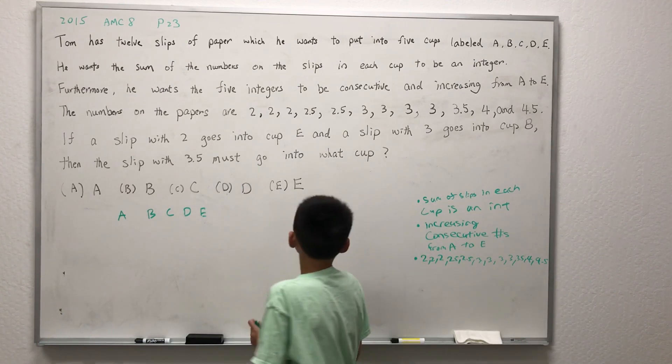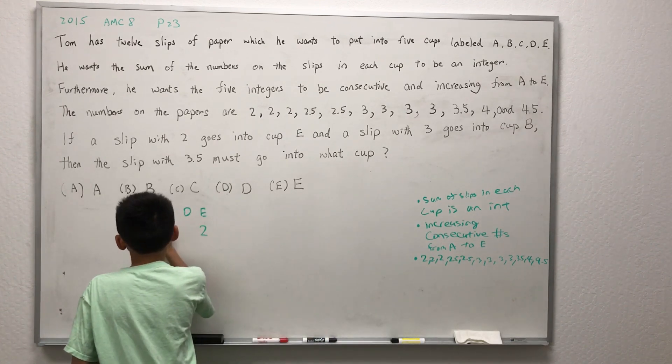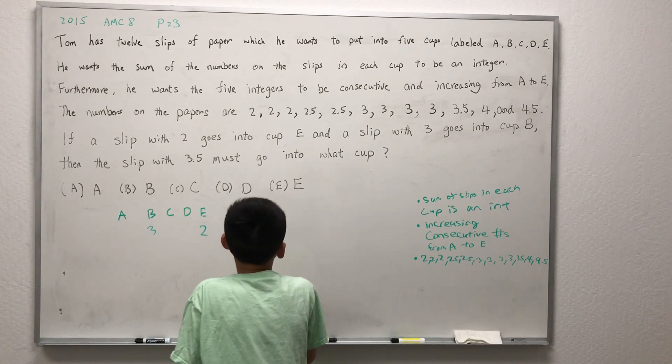If a slip with 2 goes in cup E and a slip with 3 goes in cup B, then the slip with 3.5 must go into what cup?